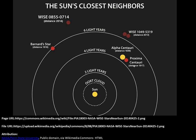Alpha Centauri A and B orbit a common gravitational point — I don't know if there is really an object between them or not. And Proxima Centauri orbits both of them. The next star system after Proxima Centauri is Barnard's Star. There are some more solar systems which I skipped in this diagram, but it's okay — I will explain them in the next video.